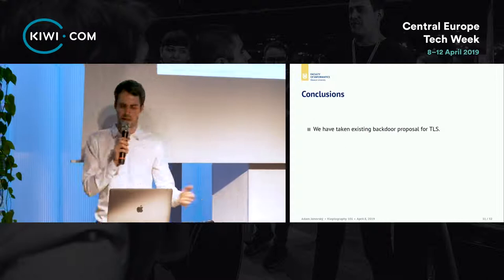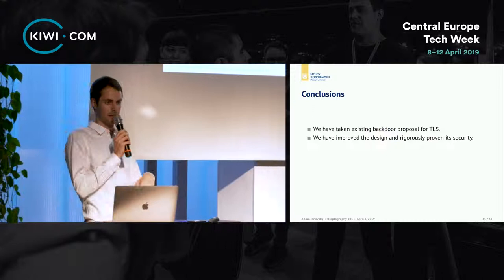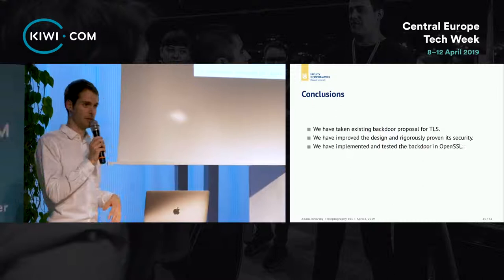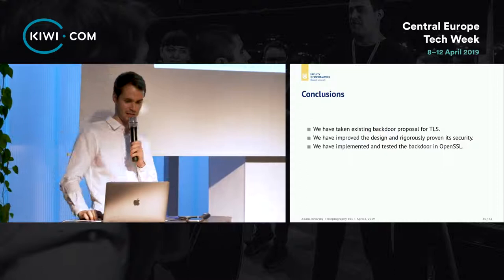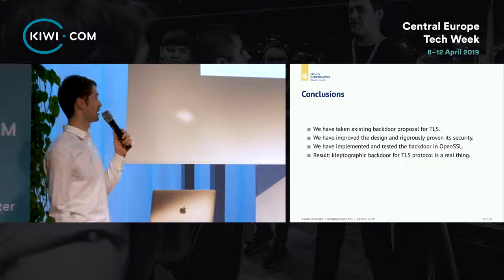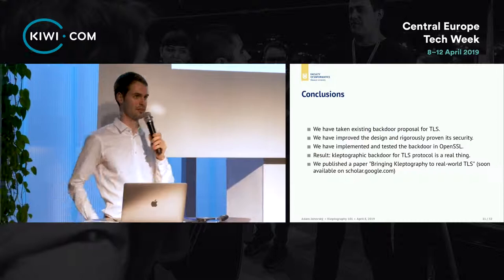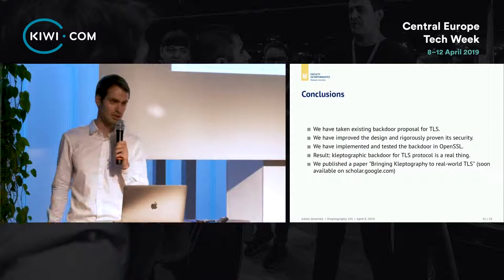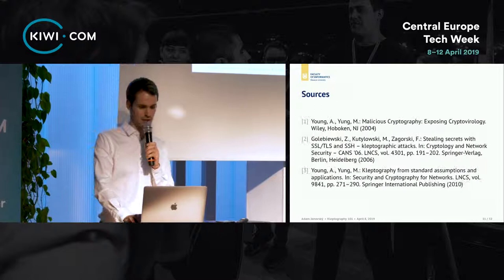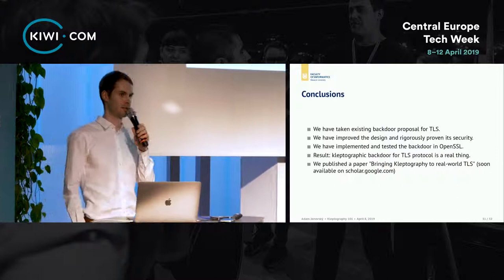In conclusion: we took an existing backdoor proposal for TLS, advanced and improved the design, and rigorously proved its security. We implemented the backdoor in the OpenSSL library — I created a pull request on GitHub, but it did not pass OpenSSL's internal checks. As a result, the kleptographic backdoor for TLS is a real thing. I'd like to acknowledge the valuable guidance of Jan Krhovjak and Vasik Matias, and we ended up publishing this as a paper called 'Bringing Kleptography to Real-World TLS', soon available on Scholar.